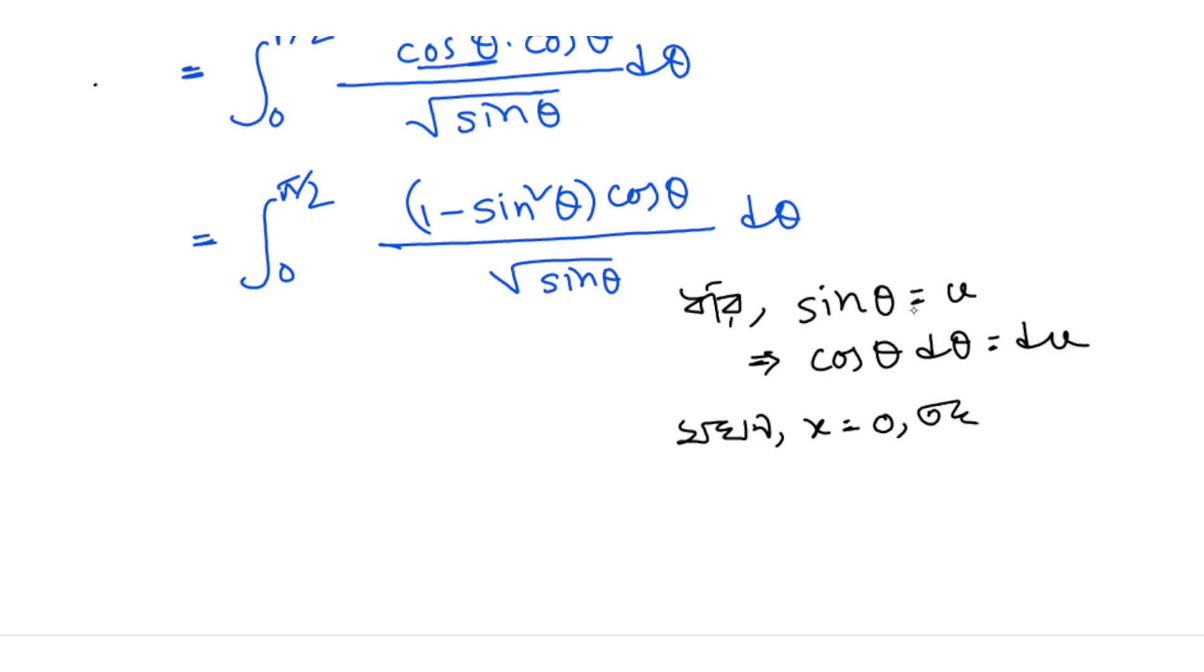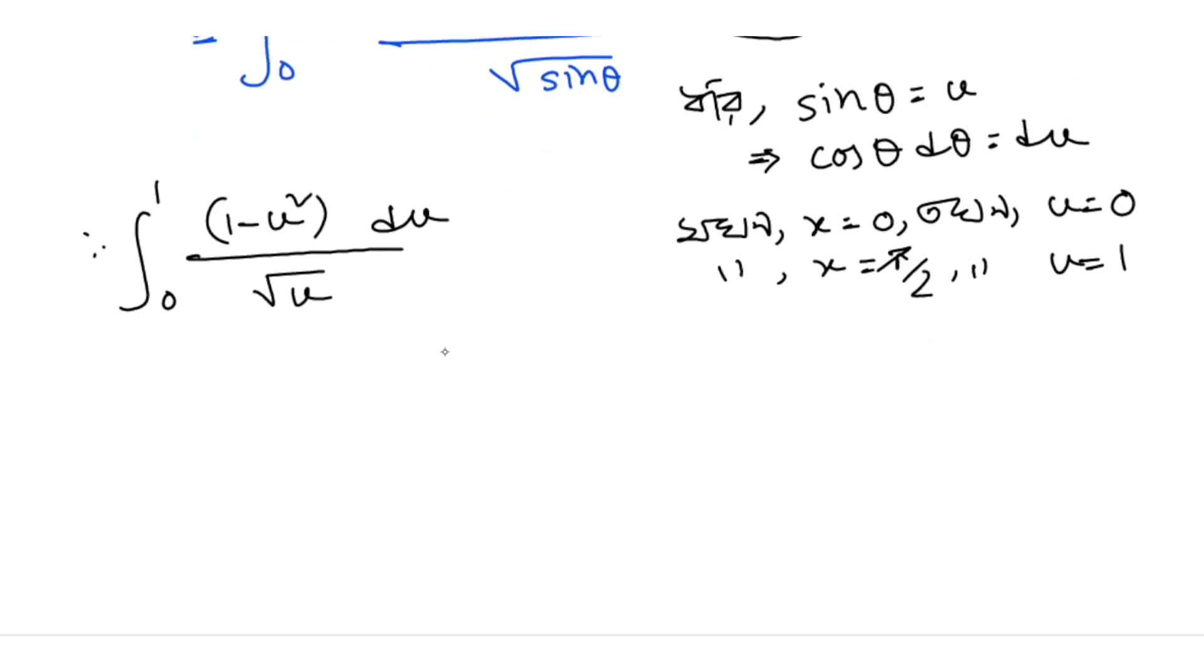When x equals 0, then u equals sin(0) which equals 0. When x equals π/2, then u equals sin(π/2) which equals 1. So our limits go from 0 to 1. Now the integral becomes the integral from 0 to 1 of (1 minus u squared) over the square root of u, du.